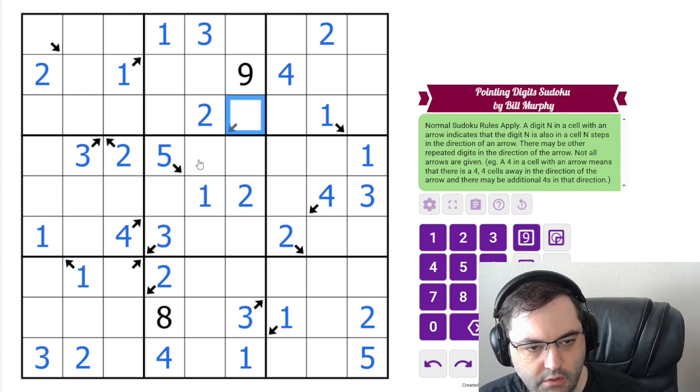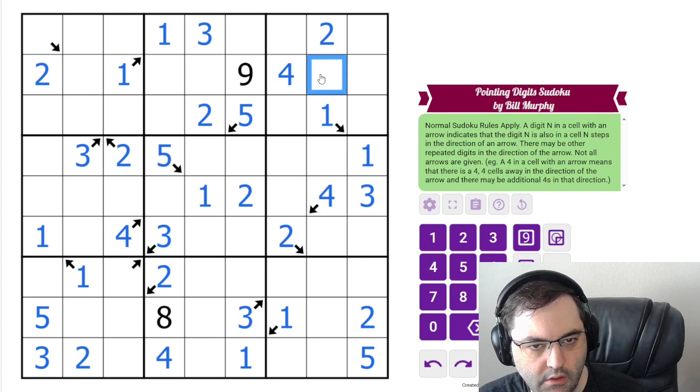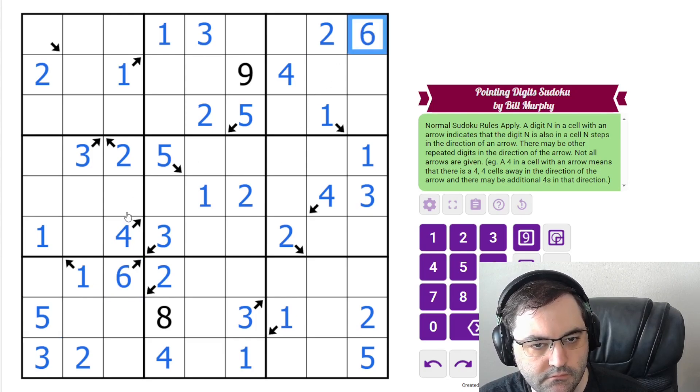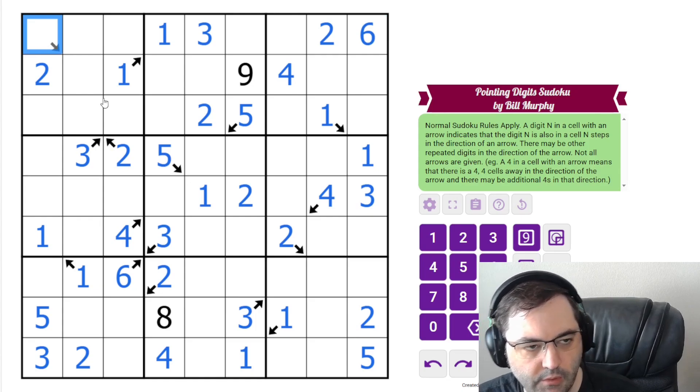This one can't be one, two, three, because there's four here and also three in the box. Four because there's one in the way. So this must be five as well. This one can't be one, two, three, four. It sees a four here and here. Could be five. Can't be five. There's five down here. Must be six.